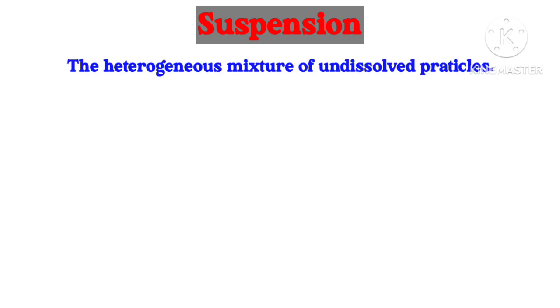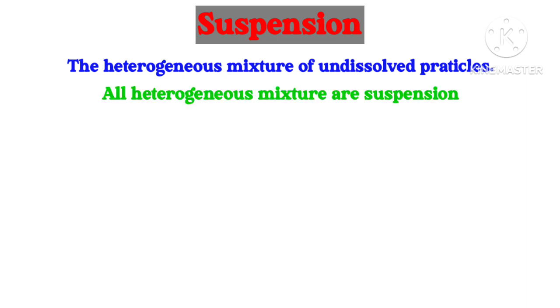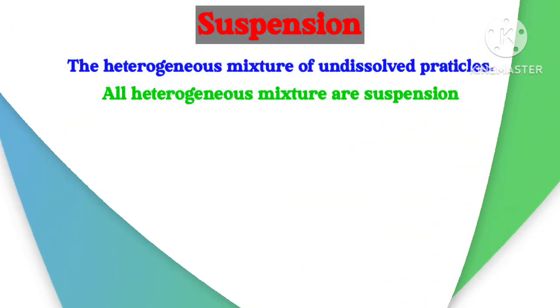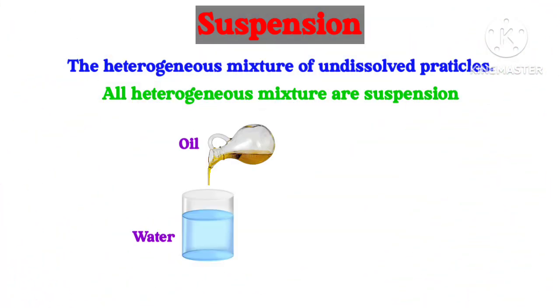Now let us see what is suspension. A suspension is a heterogeneous mixture of undissolved particles in the given medium. All heterogeneous mixtures are suspensions. For example, when we add oil to water, we get a suspension.